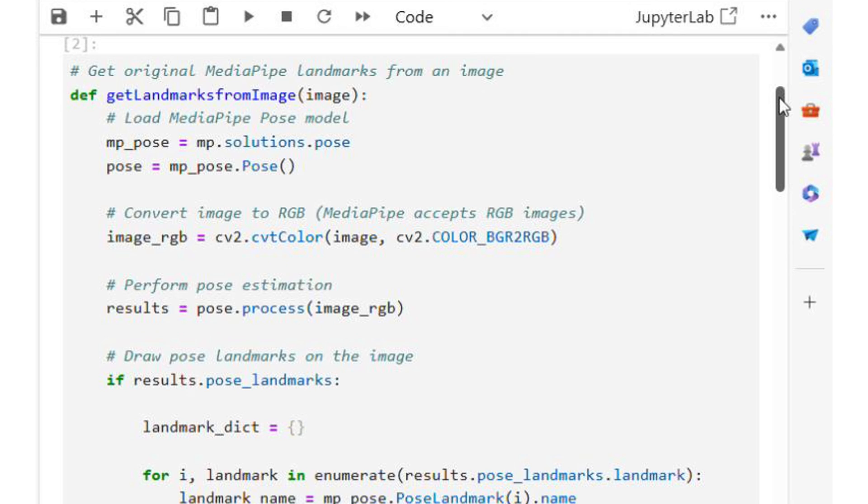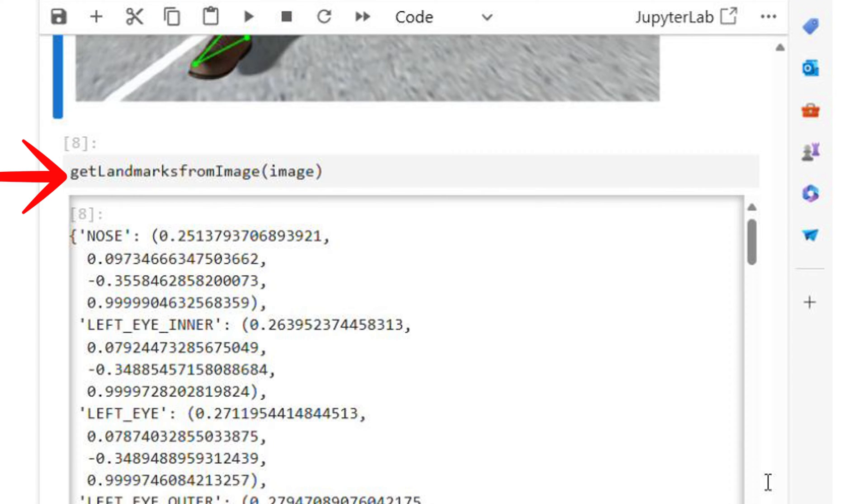I display the annotated image using matplotlib. The first function that we wrote, get landmarks from image, retrieves the landmarks including depth information or the z coordinate.